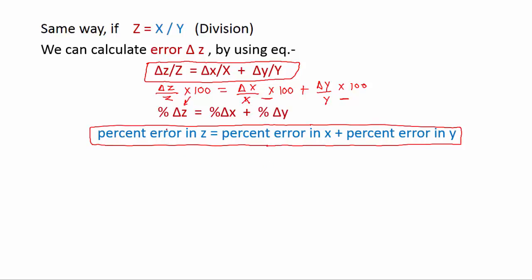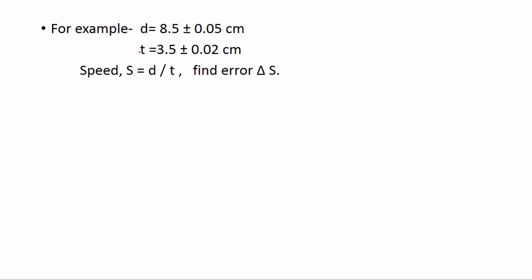So the conclusion is we use the same formula for both multiplication and division. Let's take an example. Two given quantities are distance and time, and we have to find speed and the error in speed, delta s. You know speed equals distance over time.